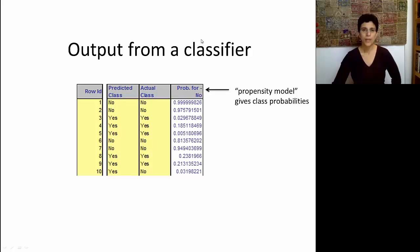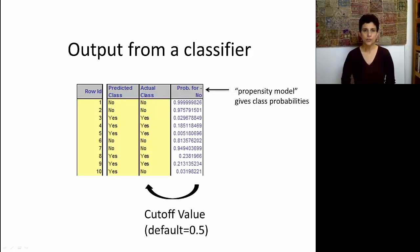You'll also notice that we have a column here that says predicted class. How do you think that the classifier converts the probabilities into predicted classes? Well, to do that, we're going to need to use something called a cutoff value, or a threshold.